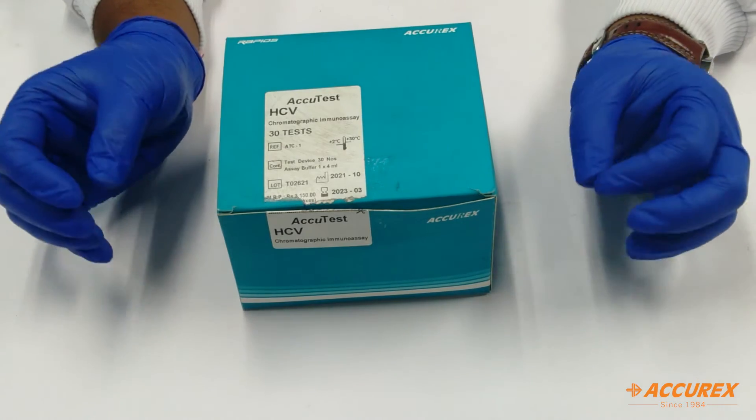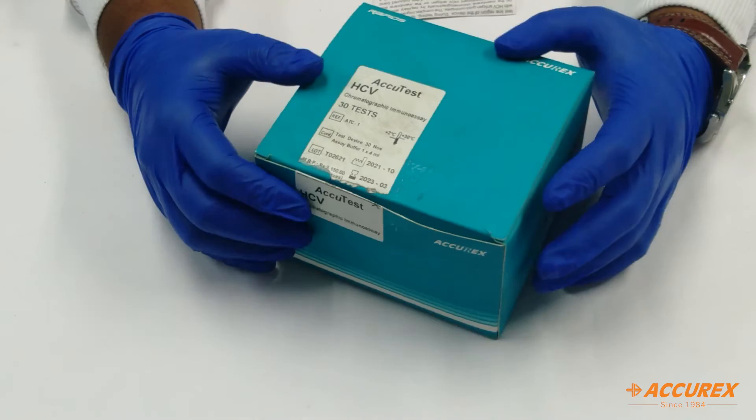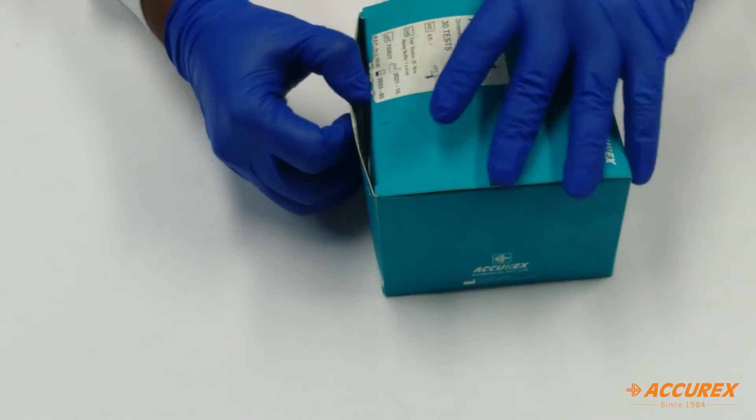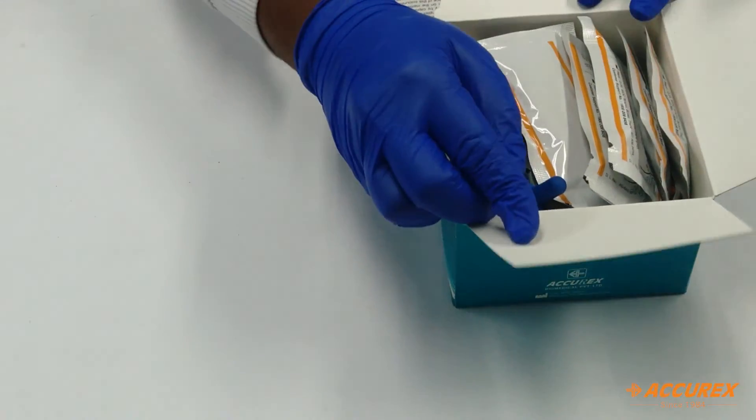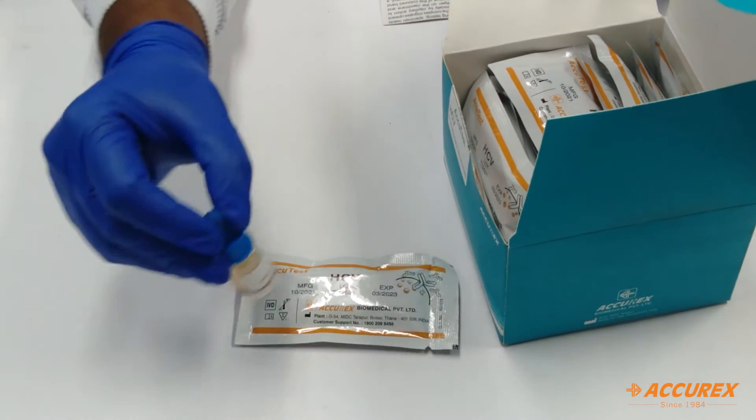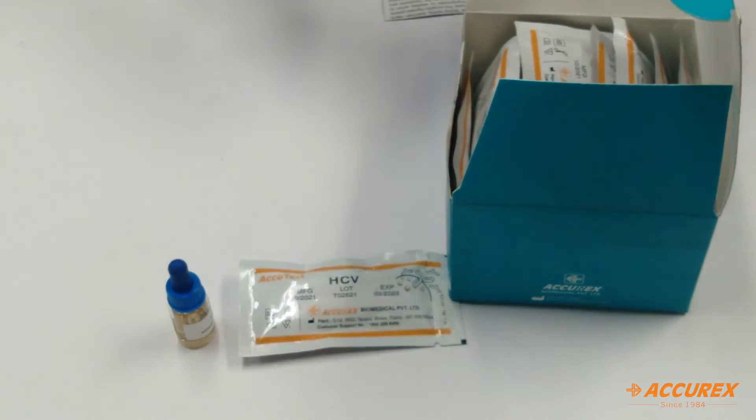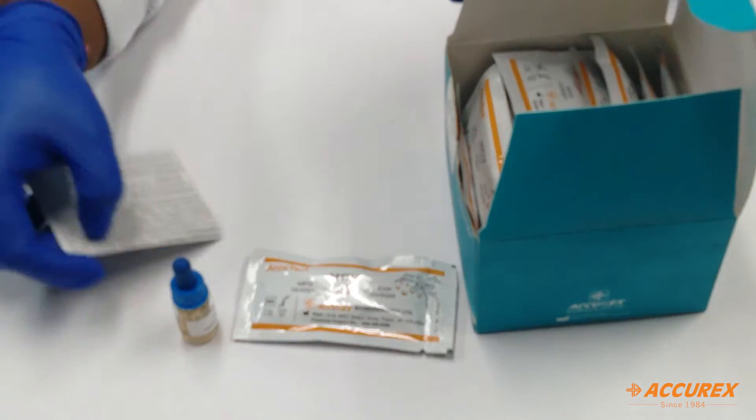For the components, what comes inside the box: here you can see the HCV test card, one buffer, and also you will find the pack insert. This pack insert you can use for reference on how to do the procedure and how to follow it.